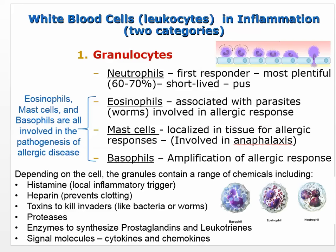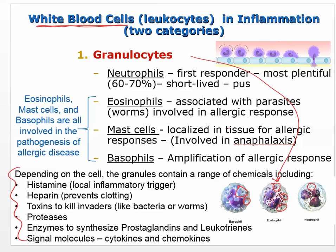Without getting into all of immunology, we need to talk about the leukocytes or white blood cells. Your book, like a lot of books, divides these into two categories: granulocytes and agranulocytes. 'A' means no, so granulocytes are cells with little granules in them. You can see that these cells have granules, and these granules contain various things. It's really not that difficult from what I want you to know about them.